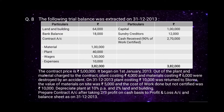Out of the plant and materials charged to the contract, plant costing rupees 4,000 and materials costing rupees 6,000 were destroyed by an accident on 31st December 2013. Plant costing rupees 10,000 was returned to stores. The value of material on site was rupees 5,000 and the cost of work done but not certified (work uncertified) was rupees 10,000. Depreciate plant at 10 percent per annum and 2 percent on land and building.